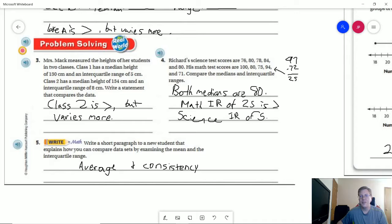For number four, the median for both of these is going to be 80. Our interquartile range for math is going to be 25, which is a lot larger than what we're working with for science. So those scores for math would be far more spread out, which you can tell by just looking at the numbers, whereas all the science scores are very close together.